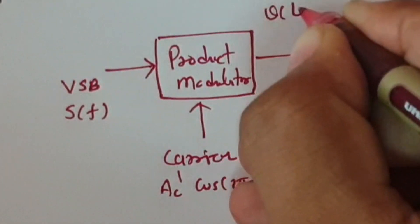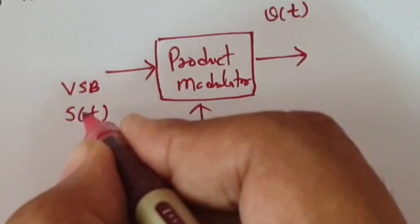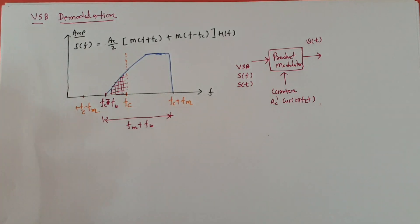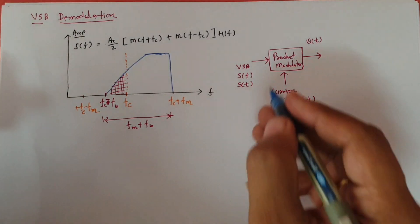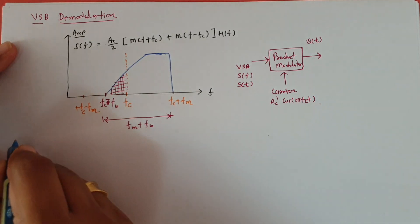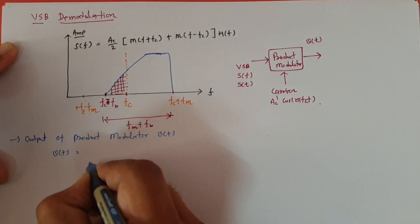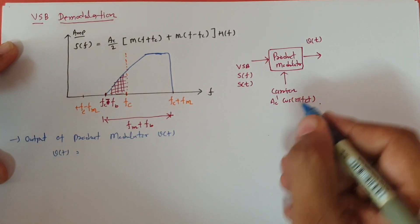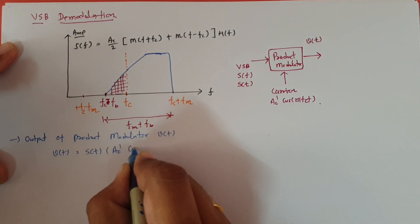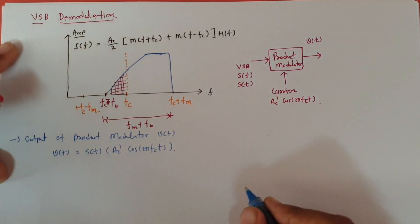The output of the product modulator is V(T). The VSB signal in time domain is S(T). So the output V(T) equals the multiplication of both in the time domain: V(T) = S(T) × AC' cos(2π FC t).